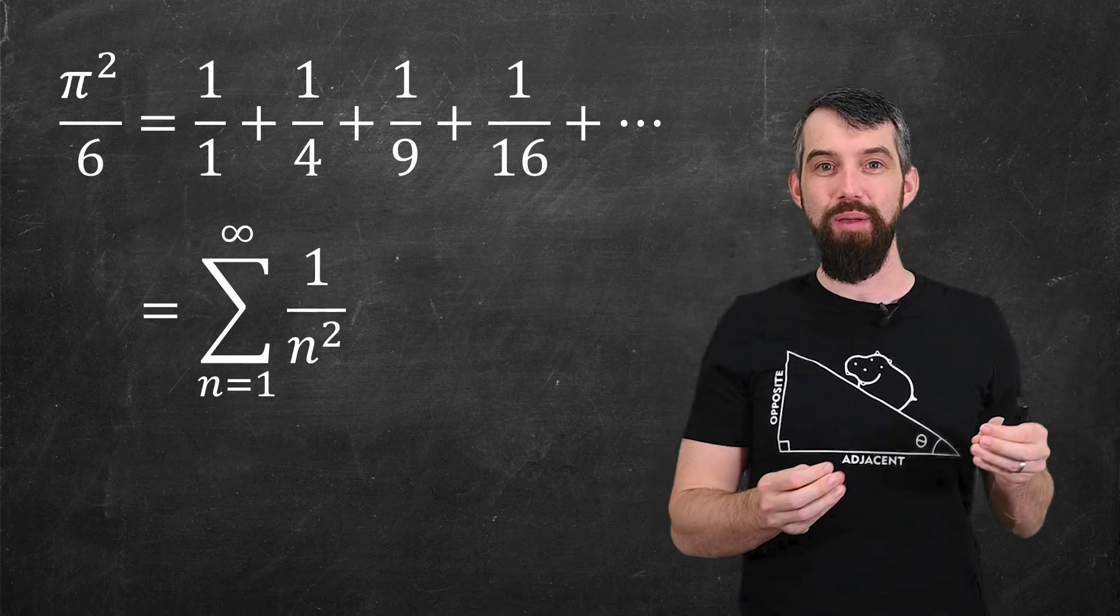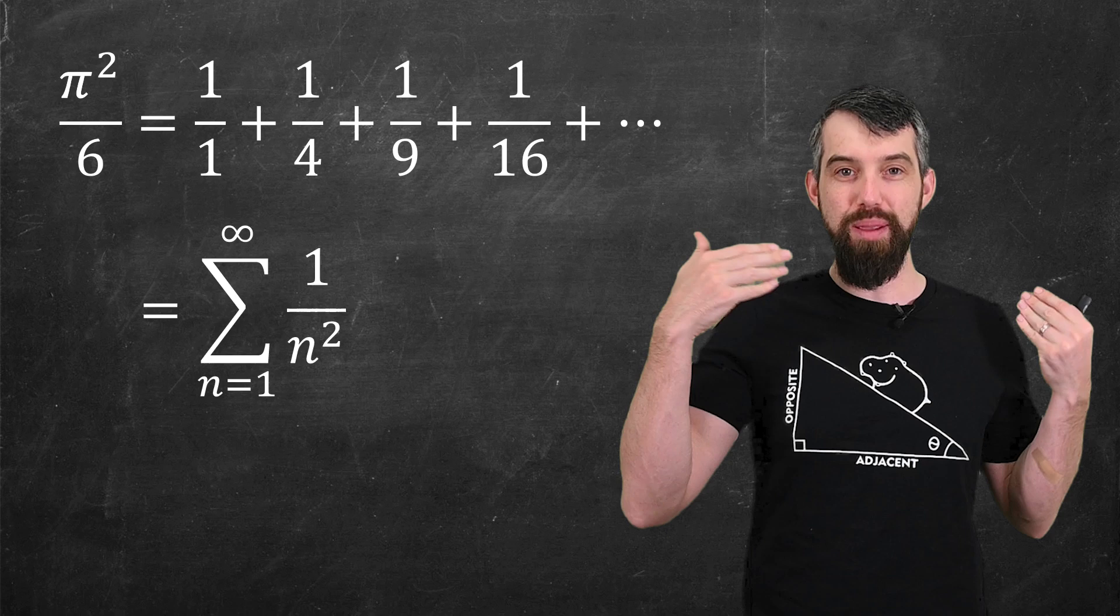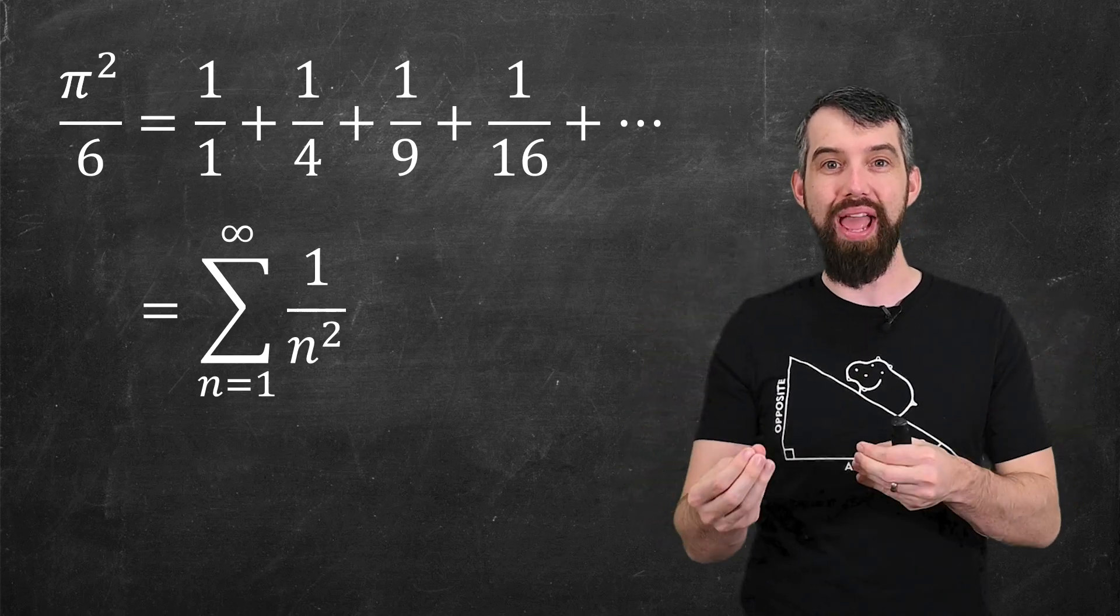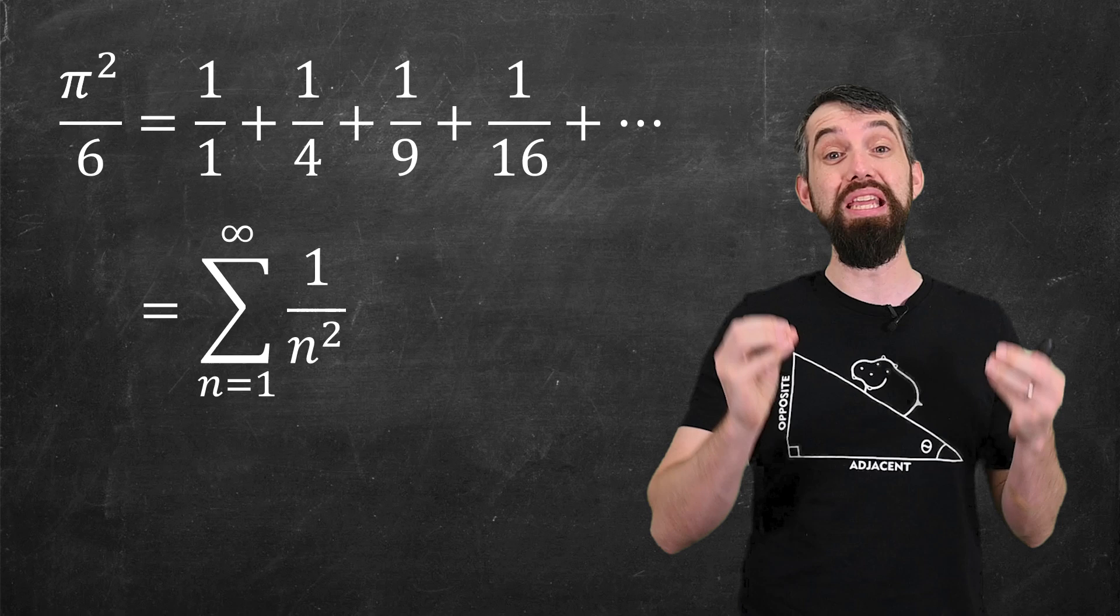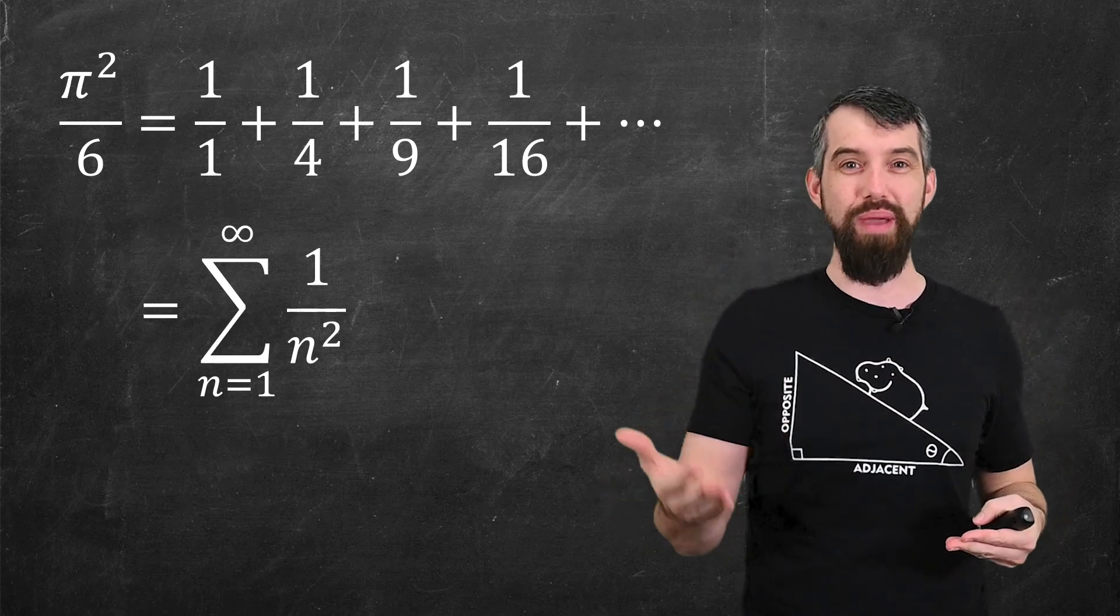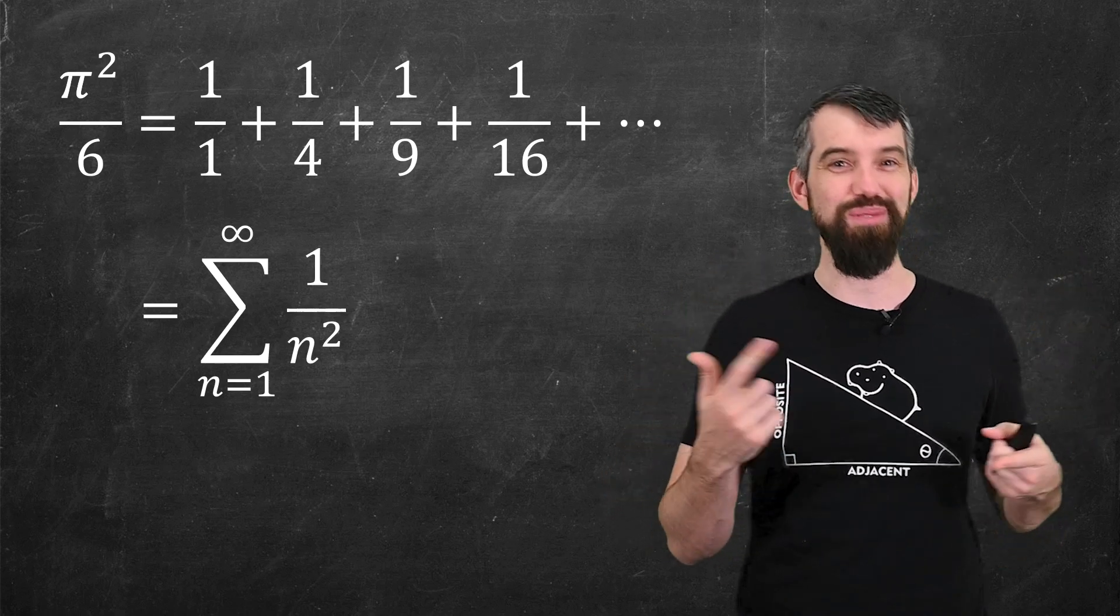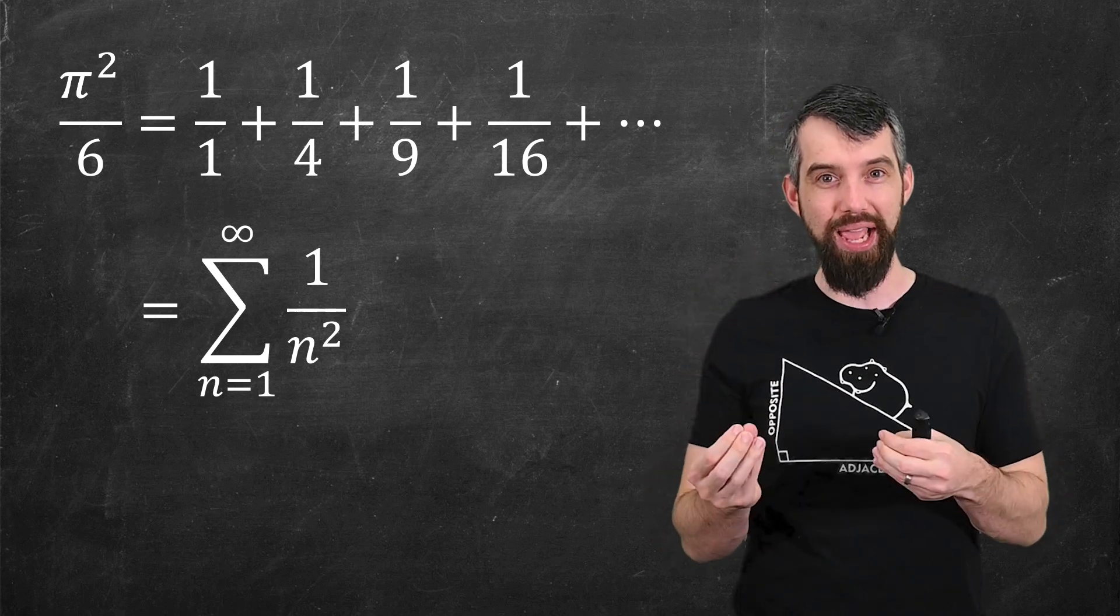a series like this, because it allows you to come up with approximations for pi. For example, you could take the sum of the first, oh I don't know, say million terms, and that's going to give you an approximation for pi² divided by 6, but from there, pi.